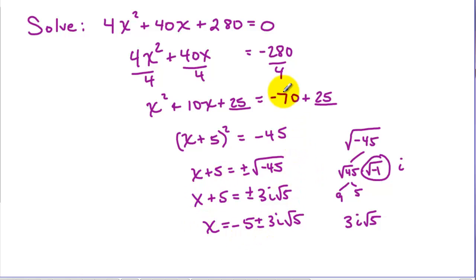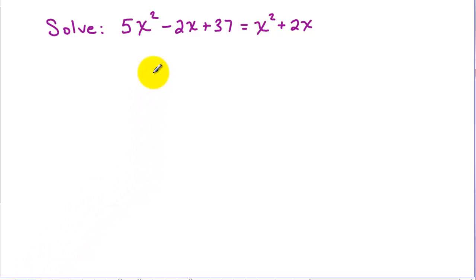Okay, so this was completing the square. And our third example here, let's get it equal to 0. So let's subtract the x squared and subtract the 2x. So I've got 4x squared minus 4x plus 37 equals 0.